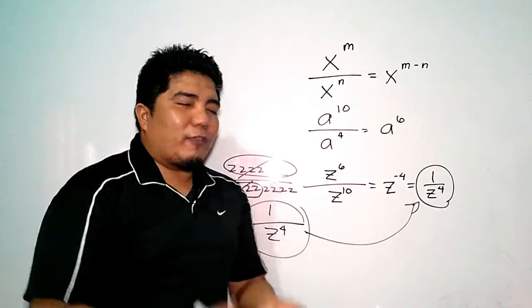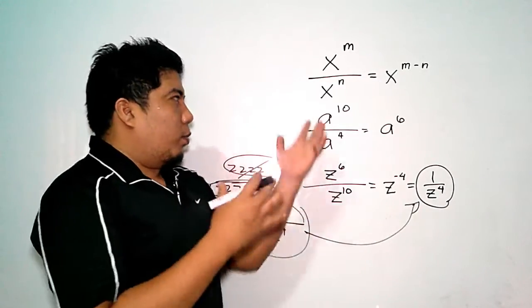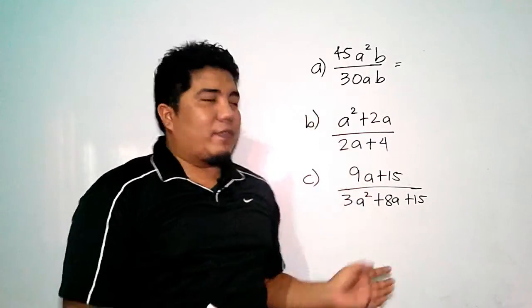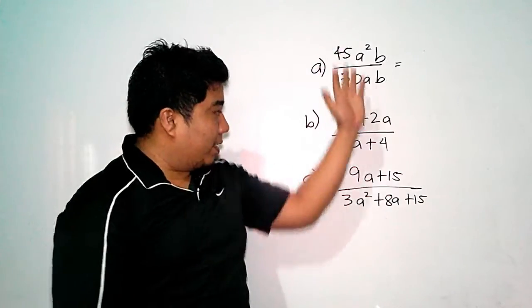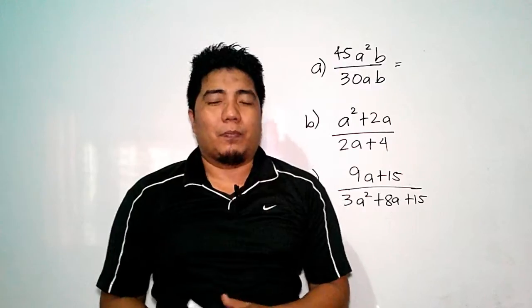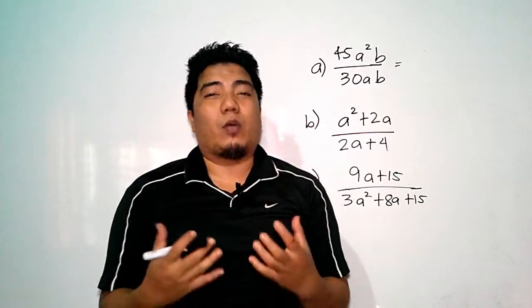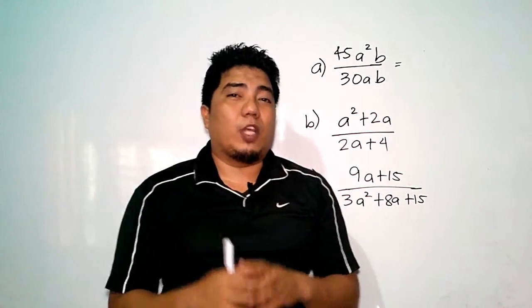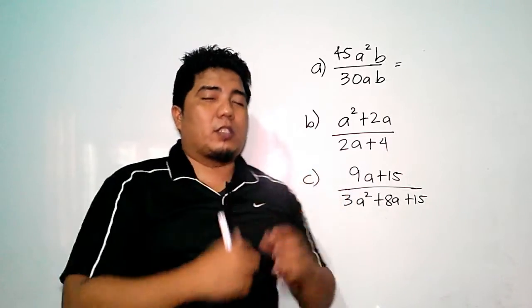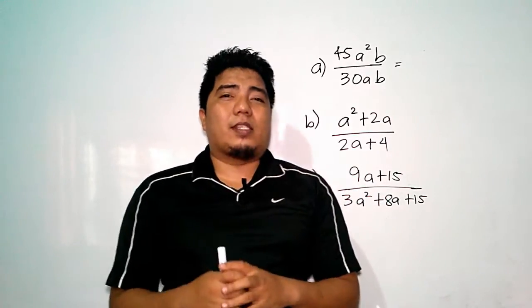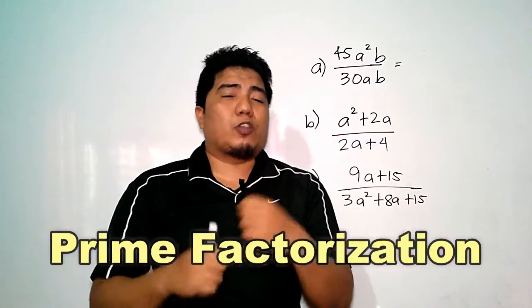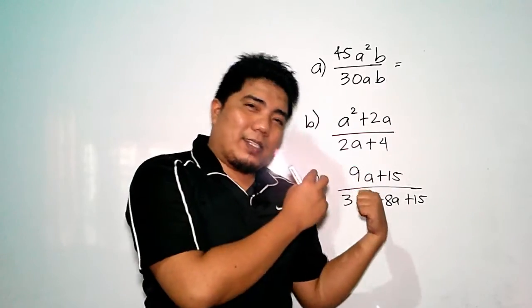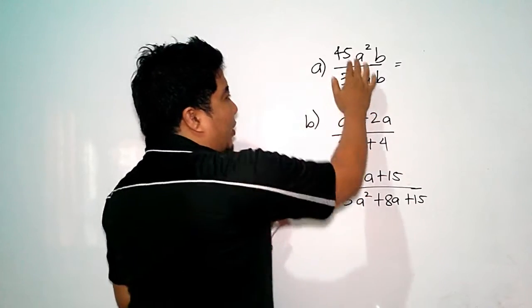Now, what if we have binomials, trinomials, and other expressions that need simplifying? We have three given rational algebraic expressions, and we need to get the simplified — lowest — form of each. One of the simplest methods is the quotient rule, and the other is prime factorization, which uses the GCF or common monomial factors.